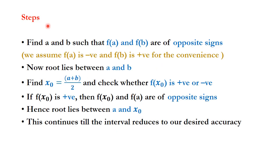The steps of the bisection method are as follows. Initially we assume a and b such that f(a) and f(b) are of opposite signs — for convenience, f(a) is negative and f(b) is positive, though you can take it in reverse. The root lies between a and b. We bisect the interval by finding x₀ = (a + b) / 2, then check whether f(x₀) is positive or negative.